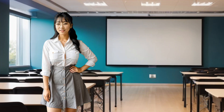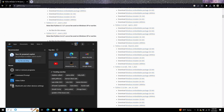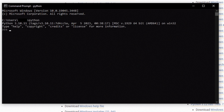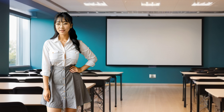Once you are done installing from the Microsoft Store or the independent installer, you will need to verify it's installed. Open the command prompt again if you closed it. Type Python and press Enter. You should see a result that prints out Python 3.10, among some other information about that particular release. If you see this, congratulations — Python is installed.